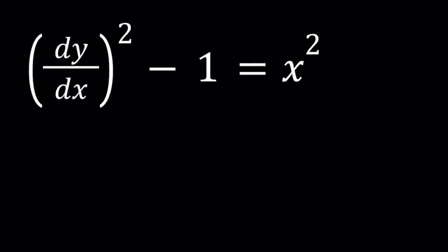We have dy over dx squared minus 1 equals x squared. dy over dx is the derivative of y with respect to x, and we're going to try to find the function that satisfies this equation.